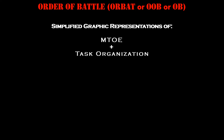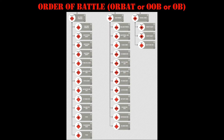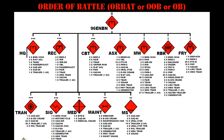Order of Battle charts are greatly simplified graphic representations of specific things from MTOEs. They show hierarchy, command relationships, unit types, and key combat capabilities and/or weapon systems of each depicted formation. What you see on ODIN is the simplest form of an ORBAT chart. What you see now are slightly more complex ORBAT charts. What you see now is how NOT to make an ORBAT chart — this person thought the whole MTOE needed to be on their ORBAT chart, making it overwhelming and confusing.